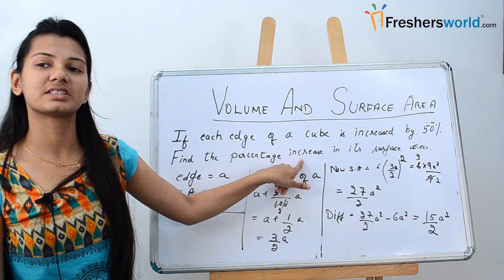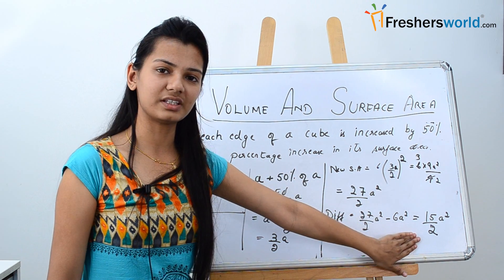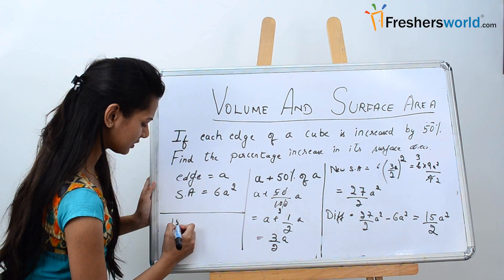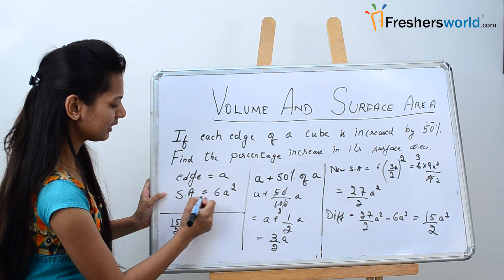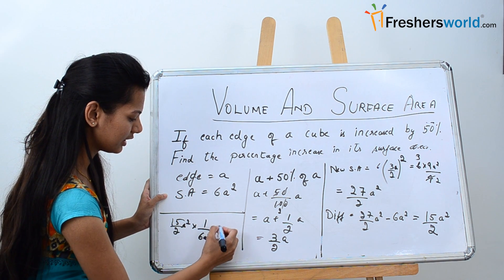Now since they have asked us to find the percentage increase what we need to do is we need to divide the difference by the original surface area into 100. Now the difference was 15 by 2 a squared divided by the original surface area that is 6 a squared into 100. This is equal to 125%.